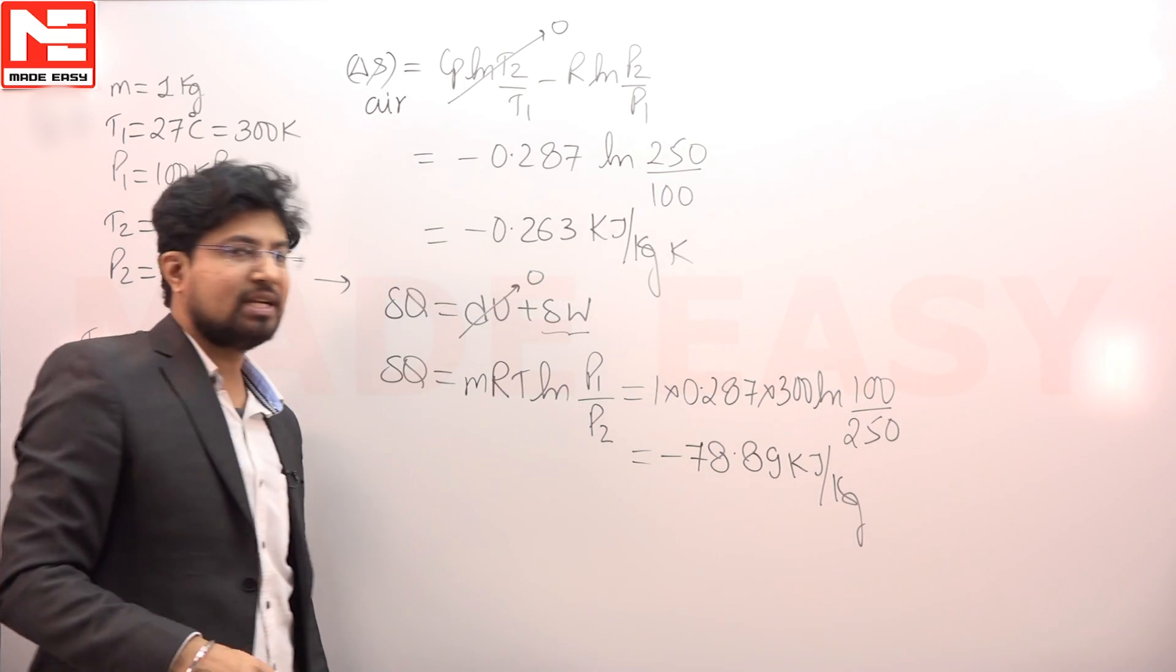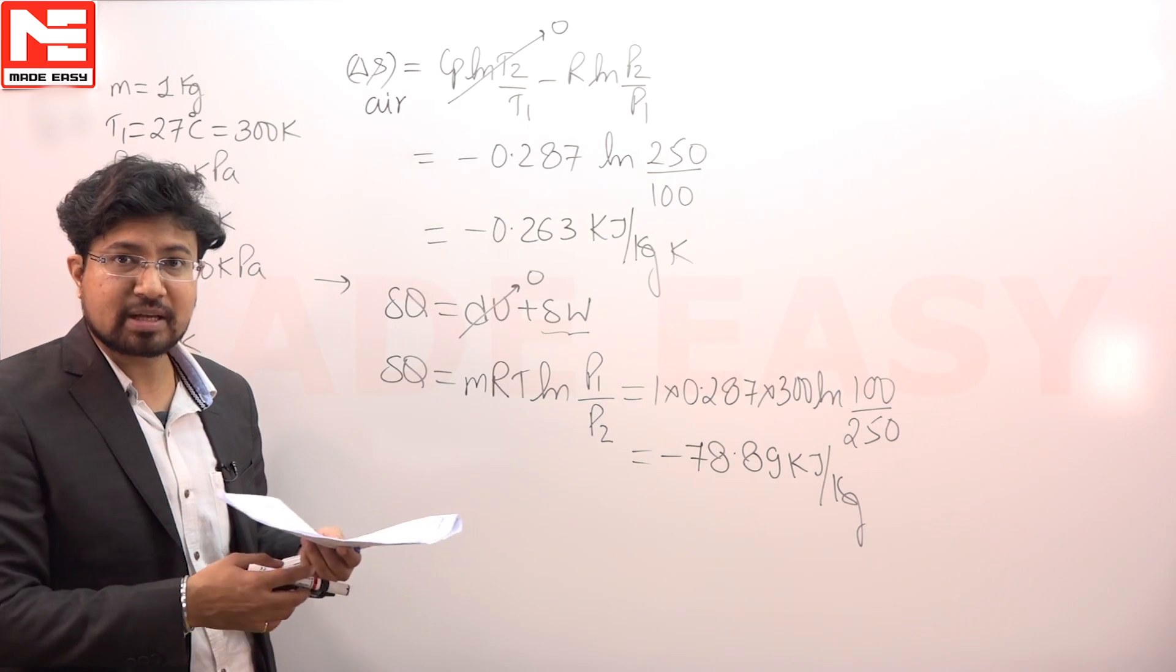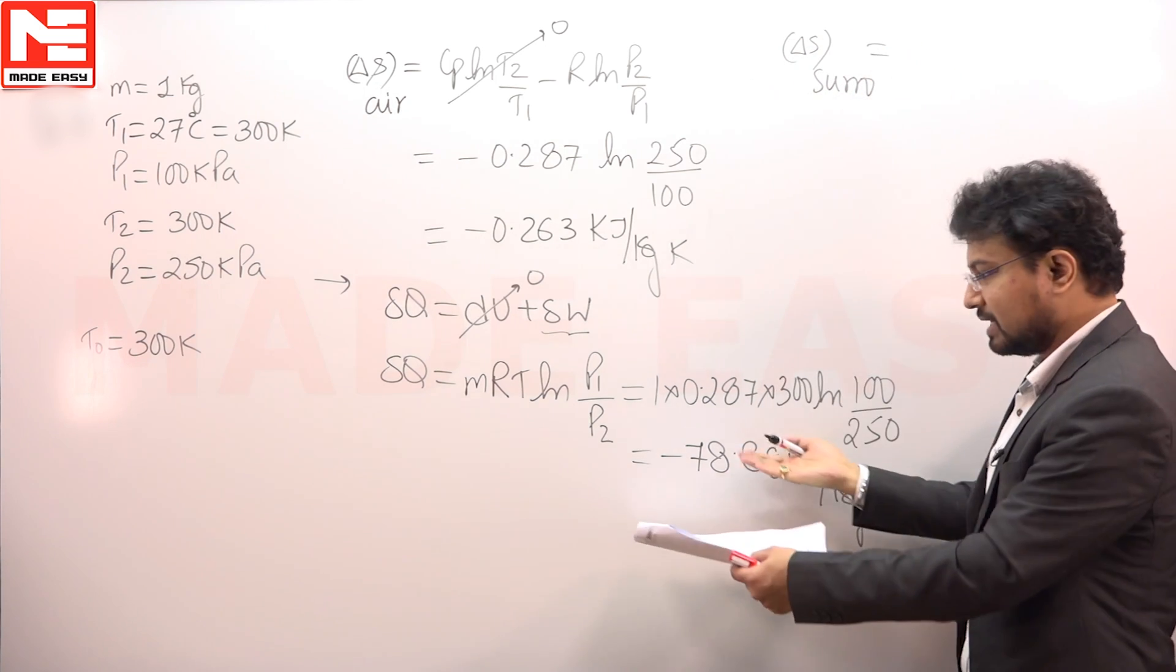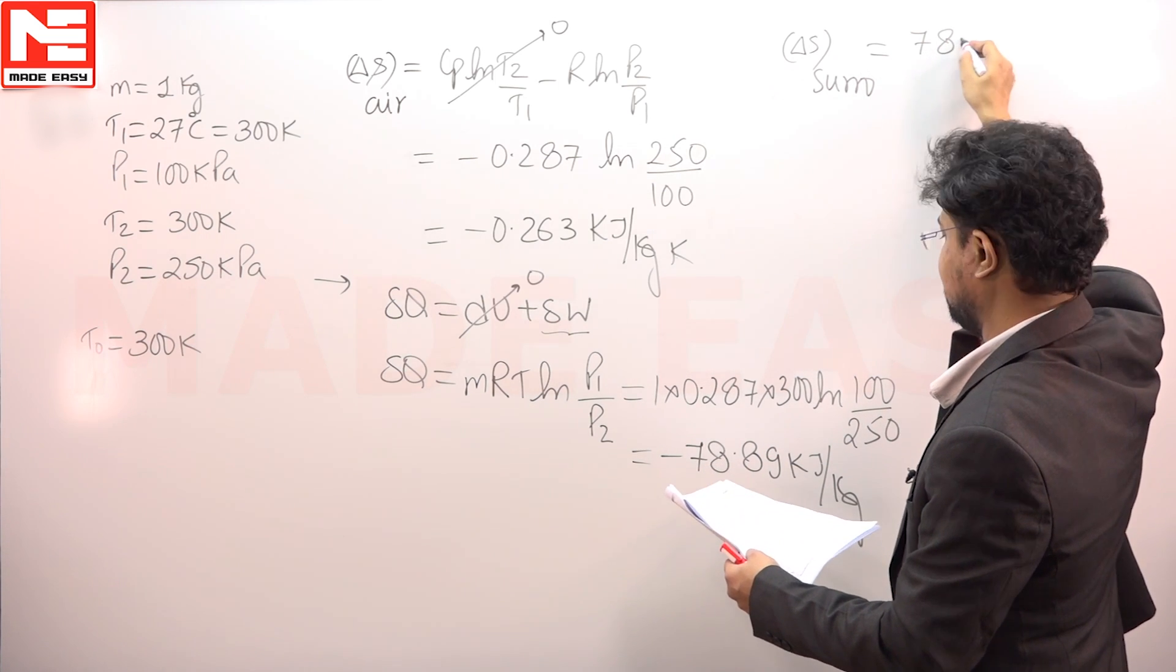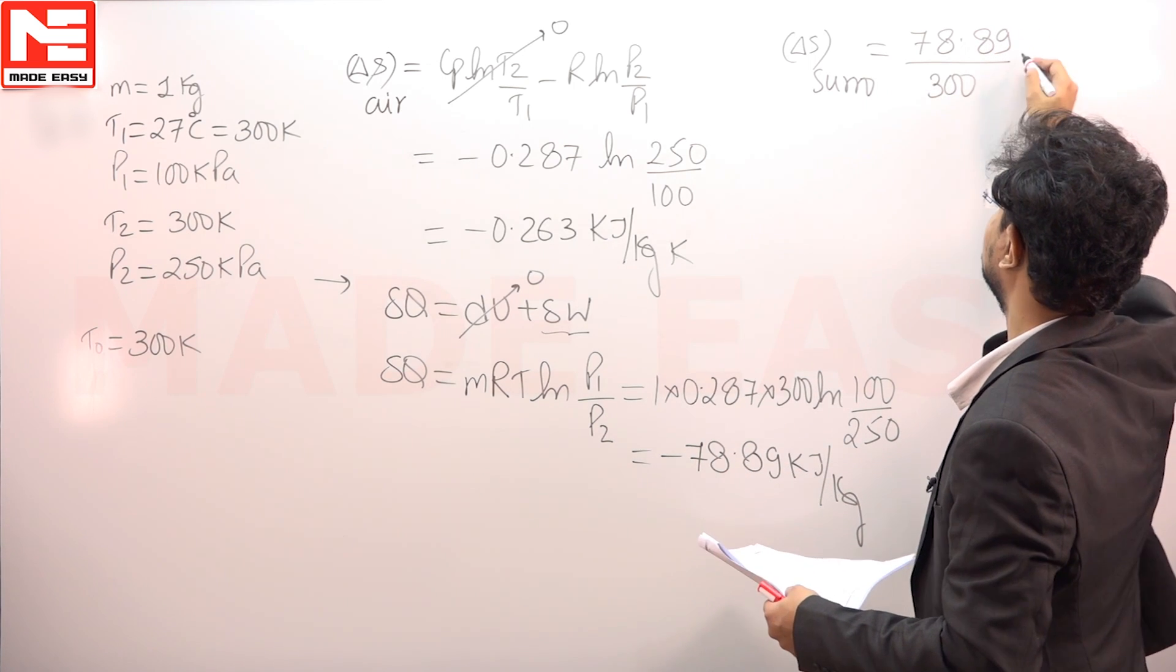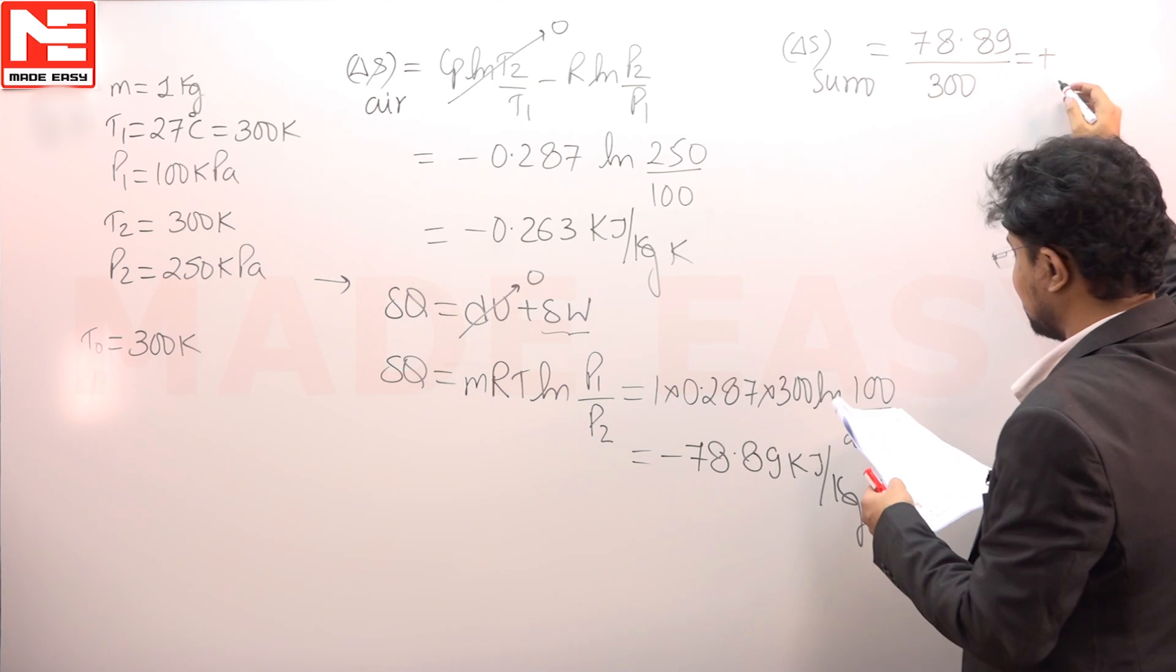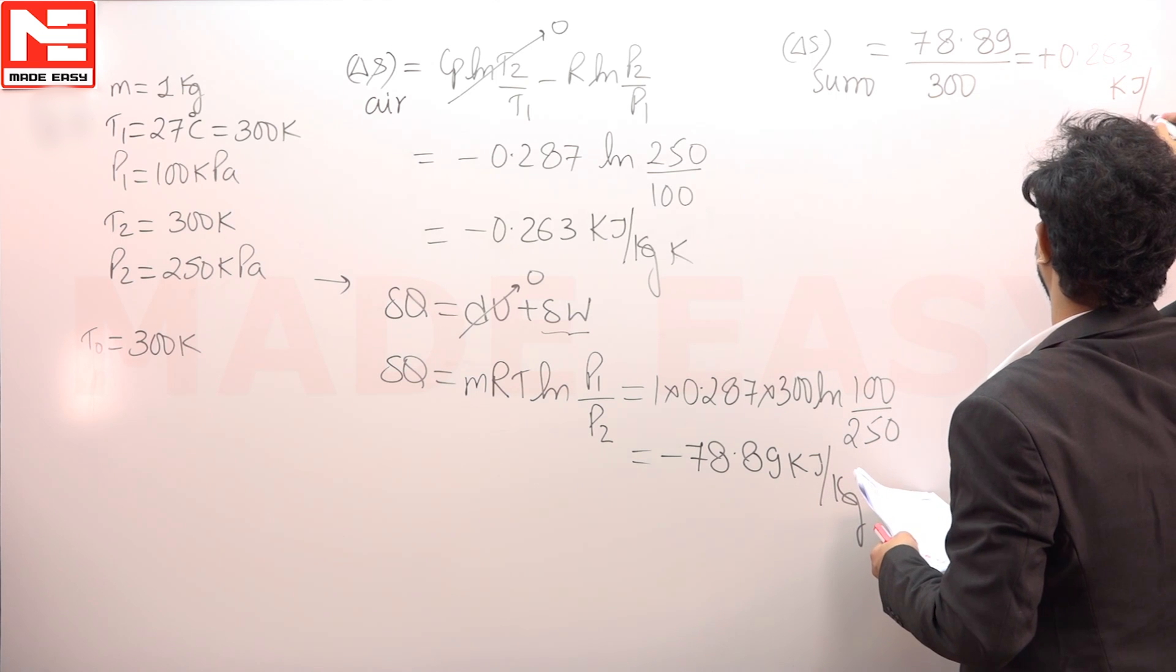Minus sign suggests that this heat is transferred out of the air. Whatever is rejected by the air will be absorbed by the surrounding. If we want to write the delta S surrounding, this heat enters in the surrounding. This should be written with the plus sign: this is 78.89 upon temperature of the surrounding, that is 300. This will come out to be plus, I have used the formula Q by T, this will come out to be plus 0.263 kilo joule per kilogram Kelvin.